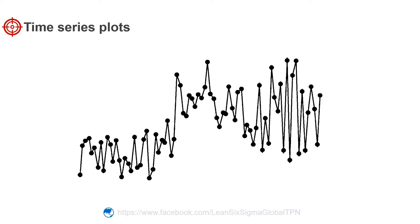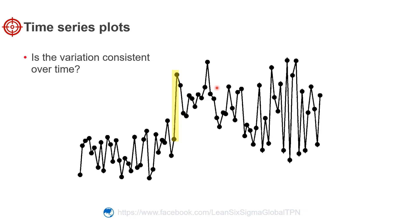Looking at the time series plot for the dimension, notice that the data values suddenly increase at certain points. This sudden shift suggests a change in the process or a change in the method of data collection. We can also use a time series plot to look for trends in the variability of the data. This plot suggests that the data fluctuates more at the end than at the beginning.